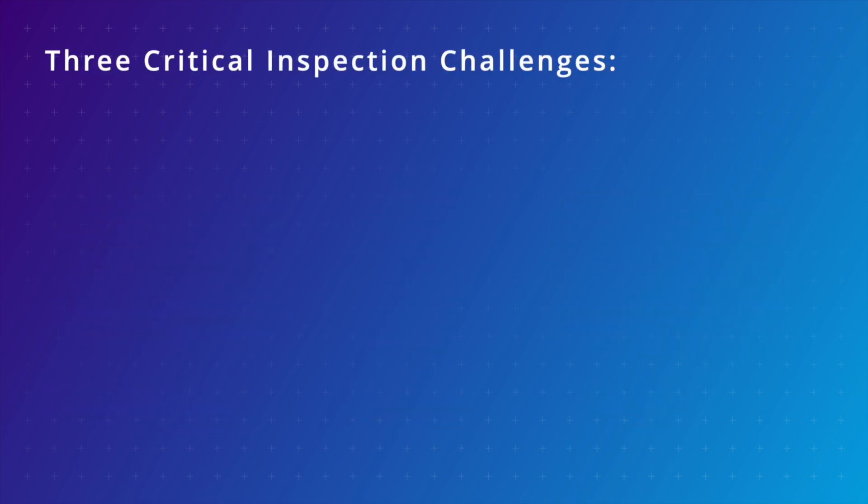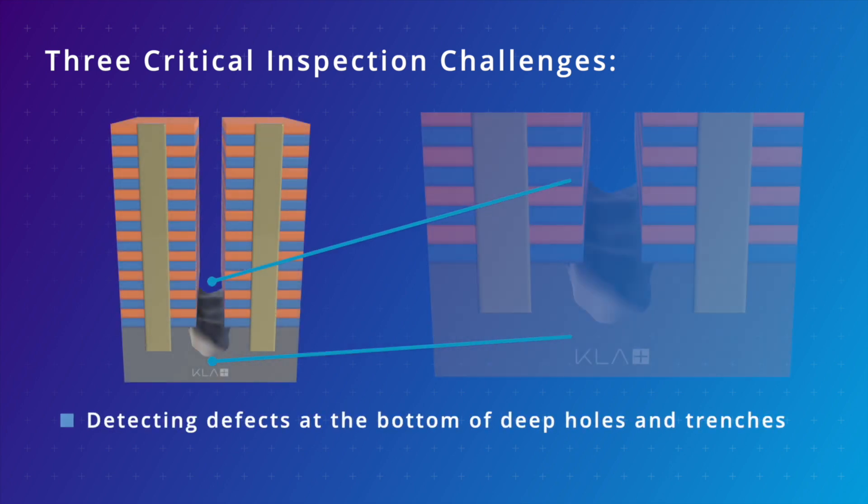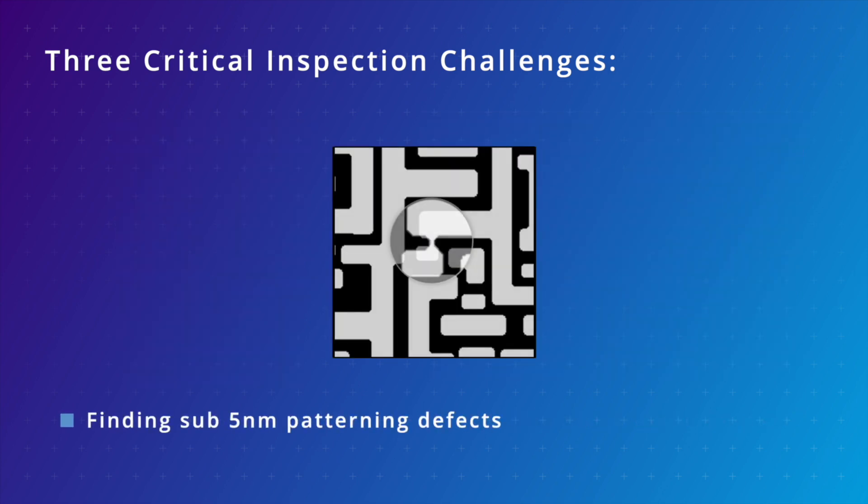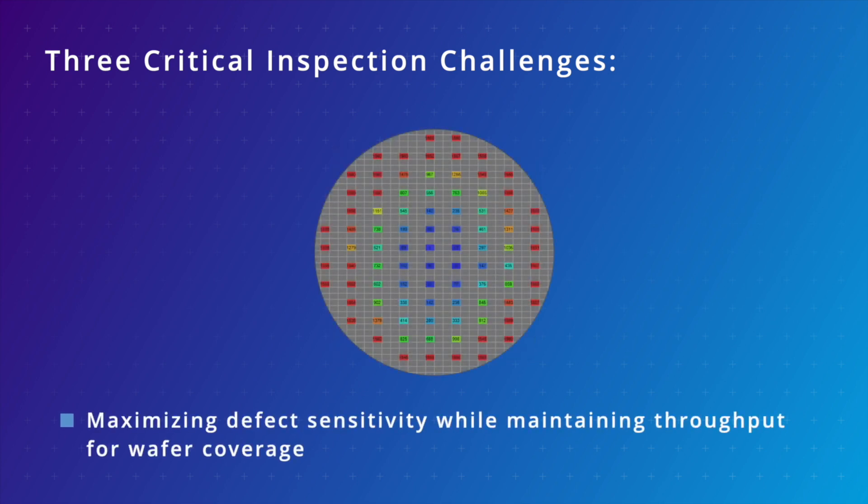There are three critical inspection challenges that must be addressed. Detecting defects at the bottom of deep holes and trenches. Finding sub-5 nanometer patterning defects. And maximizing sensitivity while maintaining throughput for wafer coverage.